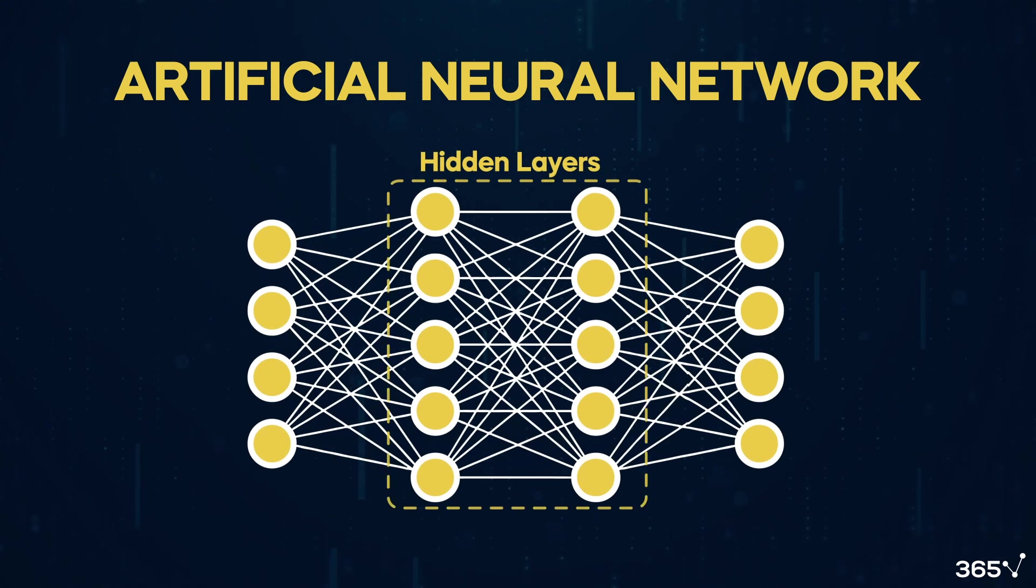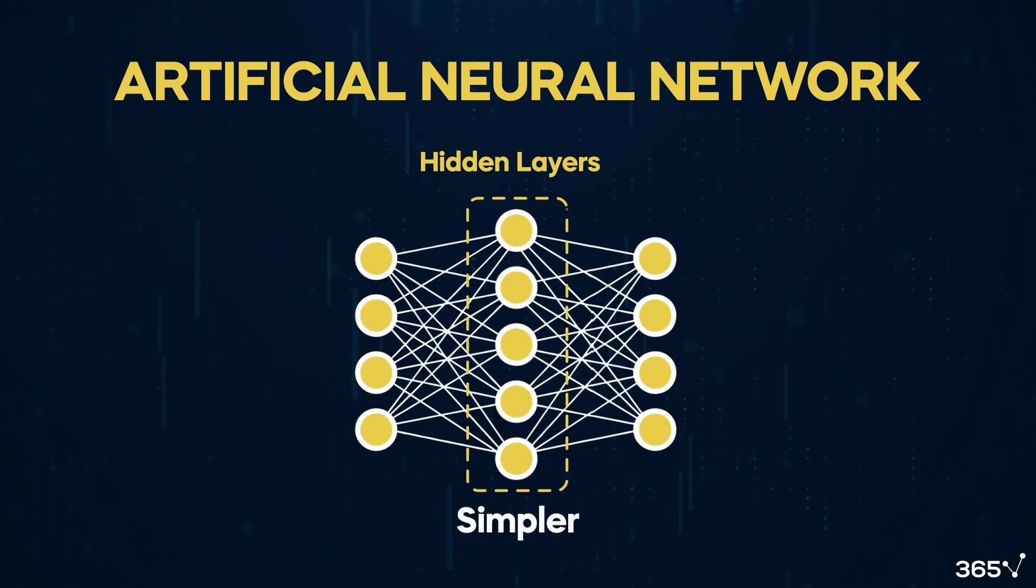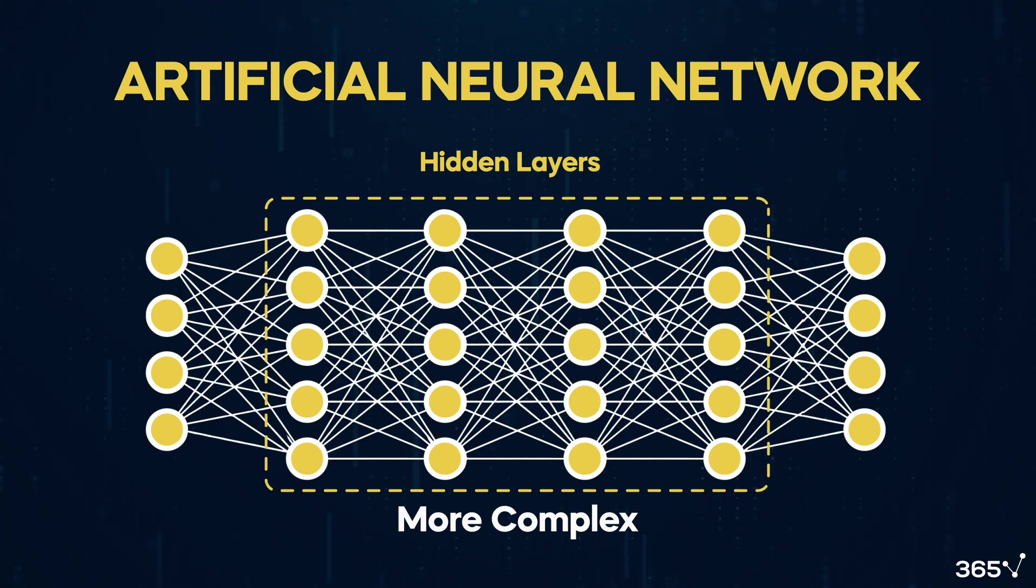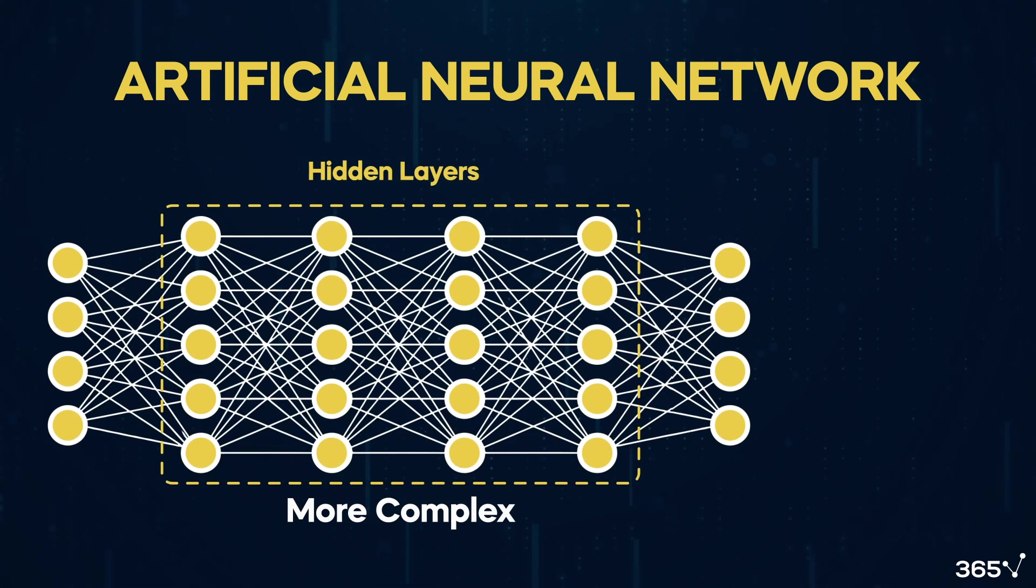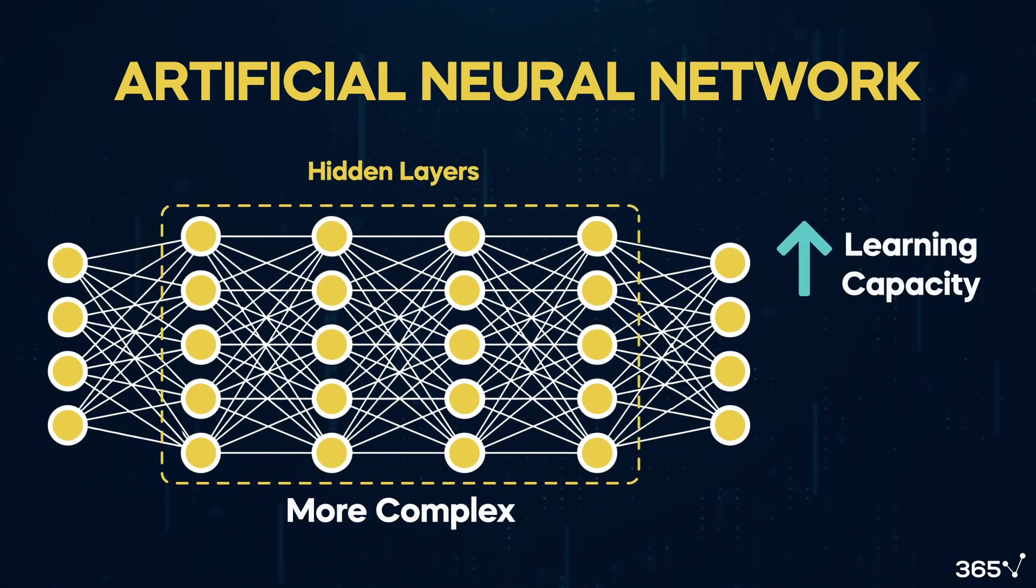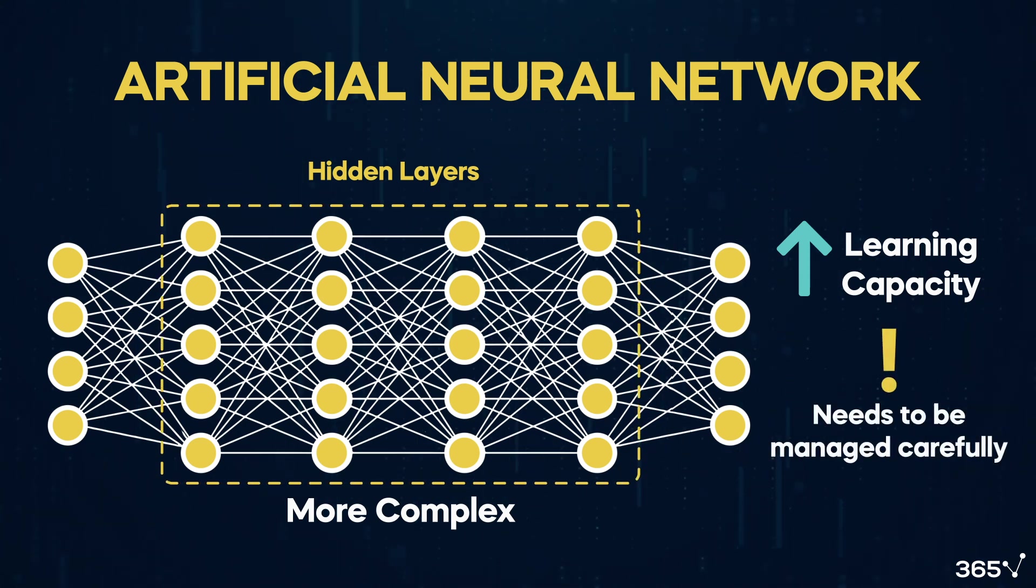Then the intermediate layers, or hidden layers, process input information. Neural networks can have one or multiple hidden layers. Increasing layers enhances complexity. Adding more layers to a network increases its learning capacity, but the downside is that it needs to be carefully managed to ensure effective learning.